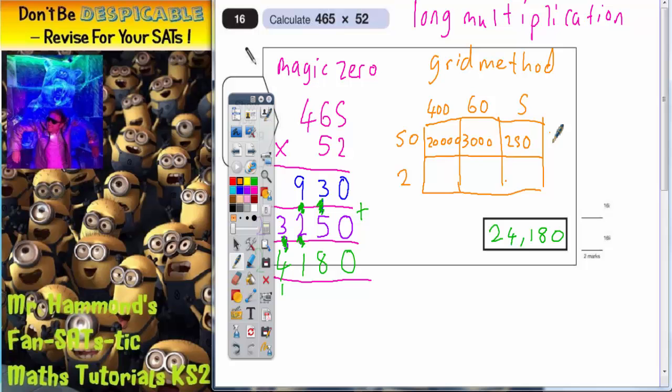So all together on the top line, we've got 23,250.